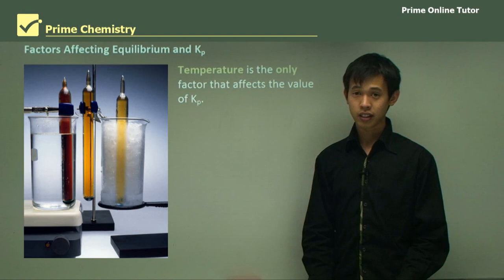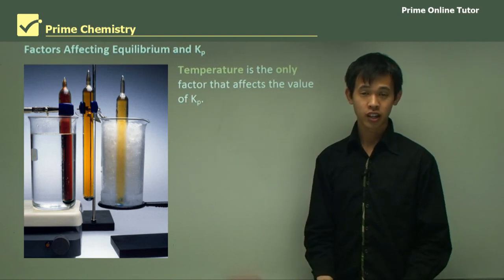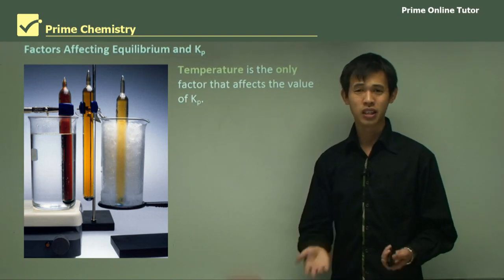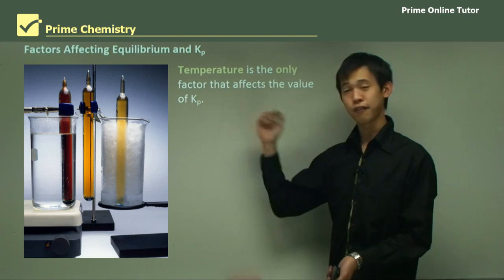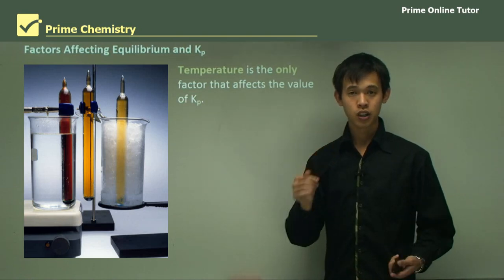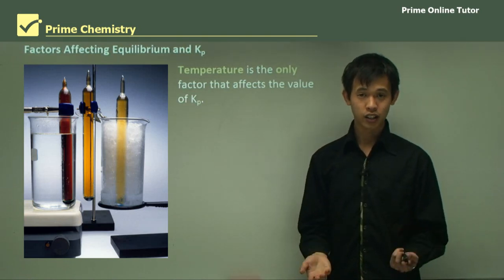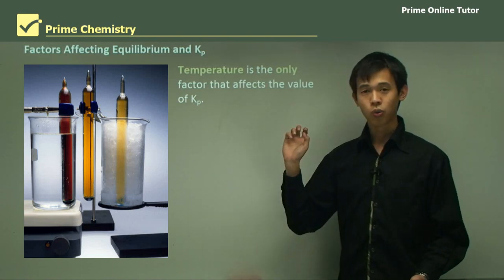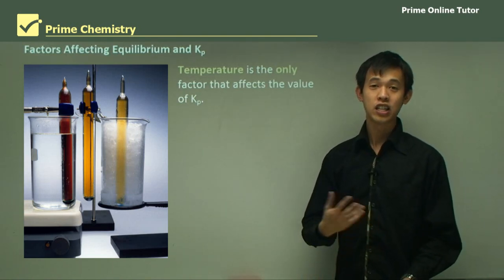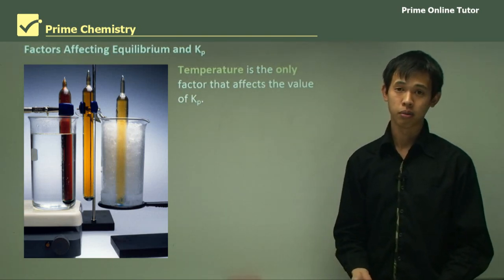Now, we would think that maybe pressure and volume, the concentration, because they somehow distort the equilibrium, shouldn't they affect Kp as well? So if that's the question on your mind, hopefully just stick around and we'll show you why each of these other things don't affect the equilibrium constant.